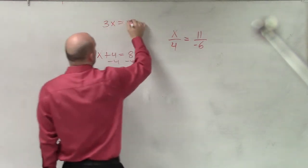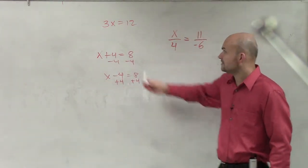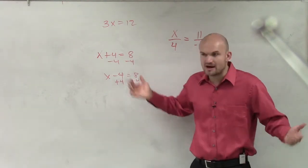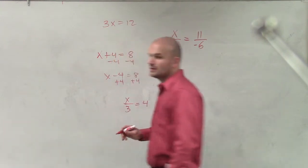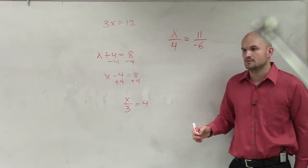So if I had 3x equals 12, what would I do here? Well, how would I solve this for x? Divided by 3, right? And then if I had x over 3 equals 4, what would I have to do for this? OK, let's go through it.